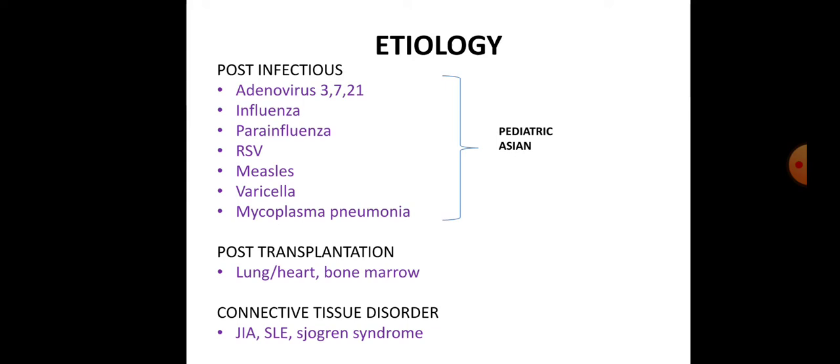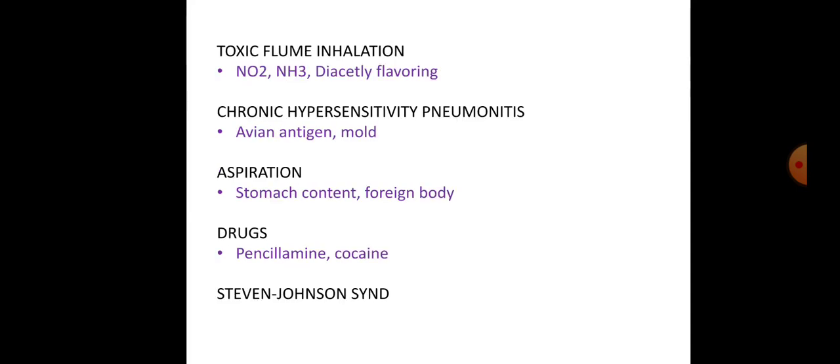Bronchiolitis obliterans can also occur post-transplantation, after lung transplantation, heart transplantation, or bone marrow transplantation. Connective tissue disorders such as juvenile idiopathic arthritis and Sjögren's syndrome are also causes. Inhalation of toxic fumes including nitric oxide, ammonia, diacetyl flavoring, and chronic hypersensitivity pneumonitis caused by avian antigen or mold are additional causes, as is aspiration of stomach contents or a foreign body, and drugs like penicillamine and cocaine, as well as Stevens-Johnson syndrome.